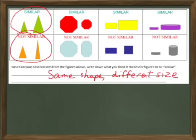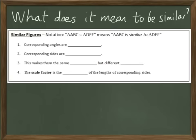Okay, let's look at this more in detail. So what does it really mean for figures to be similar? Well first, the corresponding angles are congruent.